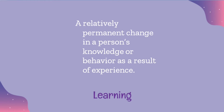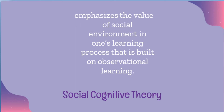Learning is defined as a relatively permanent change in a person's knowledge or behavior as a result of experience. When knowledge or information is transferred to long-term memory, which is further elaborated, rehearsed, and practiced, then learning happens. People learn in many ways, and one such theory is the social cognitive theory, which emphasizes the value of the social environment in one's learning process, built on observational learning. Based on this theory, there are four stages in observational learning: first, attention; second, retention; third, motor reproduction; and fourth, motivation.